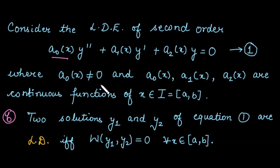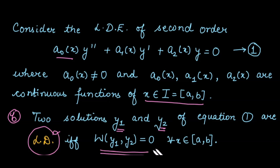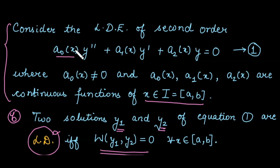There is a second result for the same type of differential equation, where the leading coefficient is not equal to 0 for any value of x, and all coefficients are continuous for every x in the given interval. For a second order equation with two solutions y1 and y2, these solutions are linearly dependent if and only if their Wronskian is equal to 0. This is again a two-way result: linearly dependent implies Wronskian is 0, and Wronskian equal to 0 implies the solutions are linearly dependent.